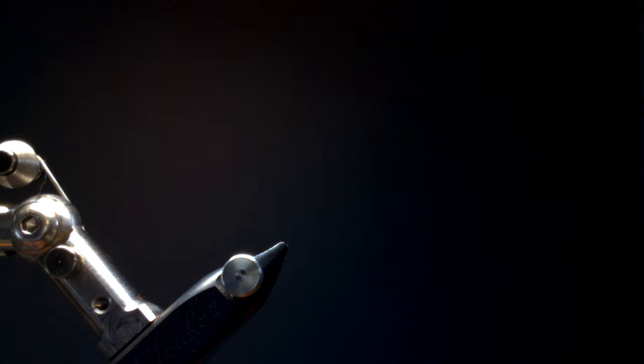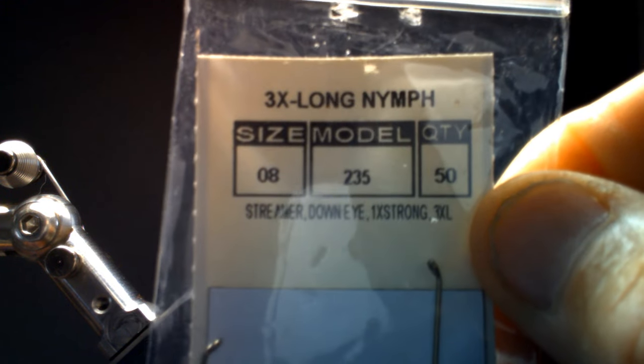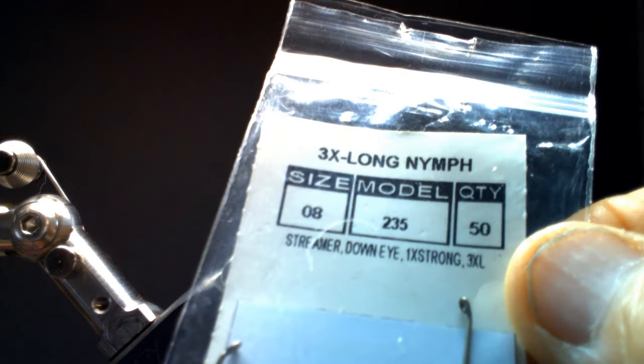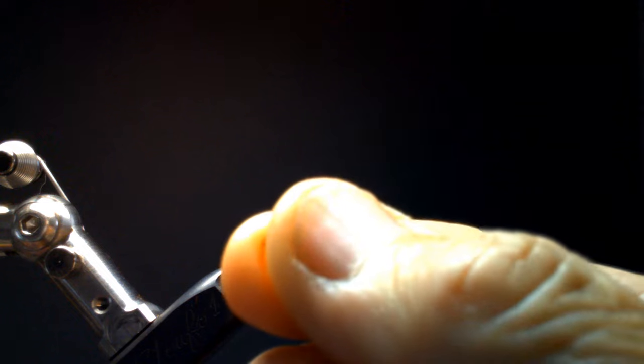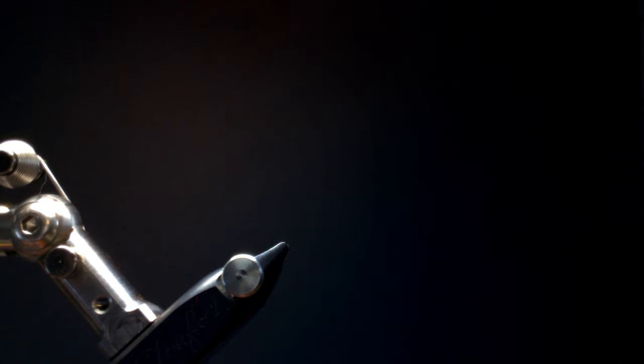I'm going to be using a 3X Long Nymph Hook at size 8. It's got a down eye. You could use one that's not a down eye, that's a straight eye, or you could even use a 2XL. I would probably recommend that if you're putting a bead on it, at least a 2X or a 3X on there. I'm debarbing my hook. And that's the little glass bead, this one's in orange.